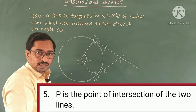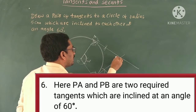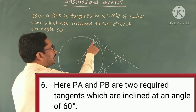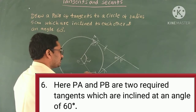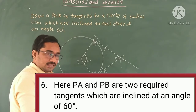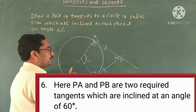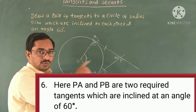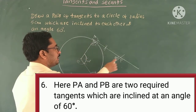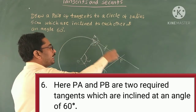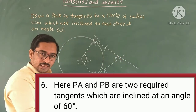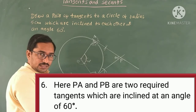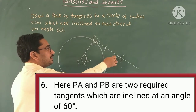What is the angle at point P? The angle at point P is 60 degrees. Why? OAPB is a quadrilateral. Angle at A and angle at B are both 90 degrees — that is 180 degrees. Angle at O is 120 degrees. So 180 plus 120 equals 300. From the angle sum property of a quadrilateral, the sum of all angles is 360 degrees. The remaining angle at P must be 60 degrees. PA and PB are the tangents to the given circle, and the angle between the tangents is 60 degrees. This completes our construction.